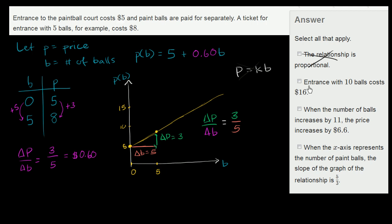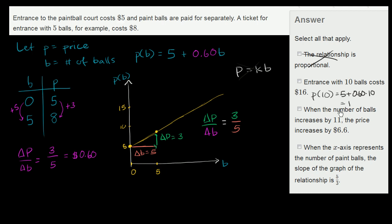Next statement: entrance with 10 balls costs $16. We can test that. When B = 10, the price is 5 + 0.60 × 10 = 5 + 6 = $11, not $16. So this isn't right either.